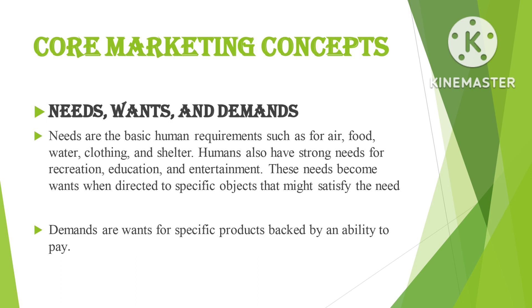A U.S. consumer needs food but may want a Chicago-style deep dish pizza and a craft beer; a person in Afghanistan needs food but may want rice, lamb, and carrots — our wants are shaped by our society. Types of needs include: stated needs, real needs, unstated needs, delight needs, and secret needs — for example, the customer wants friends to see them as a savvy consumer.